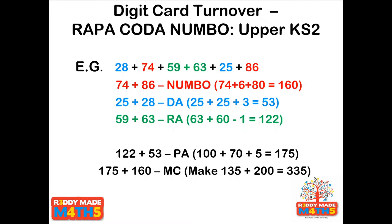That left us with 122. I added 53 back in by partitioning to get 175. That left the final number 160. I manipulated the calculation — passed 40 over to make it 135 plus 200. I could have just partitioned: 200 plus 130 plus 5. Or counted on: 175 add 100 is 275 add 60. Or doubled and adjusted: double 160 plus 15. That's the great thing about this activity — one calculation can be done four different ways, so choose whichever you prefer.